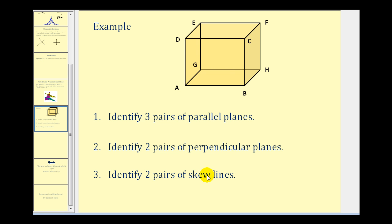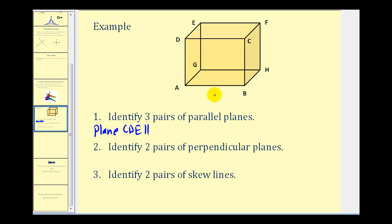Let's look at an example to review the main topics. Number one, using this figure, we want to identify three pairs of parallel planes. The top and bottom of this box would be parallel. Remember, one way to identify a plane is to use three points in the plane. So for the top plane, plane CDE is parallel to the bottom of the box, which we'll call plane ABH.